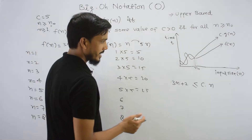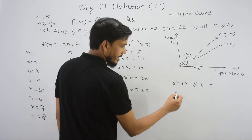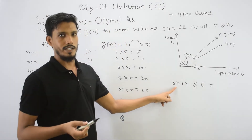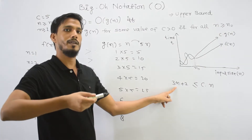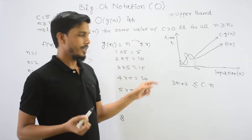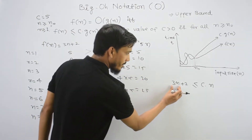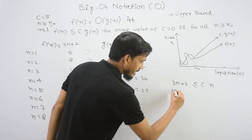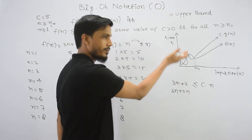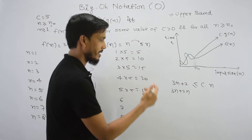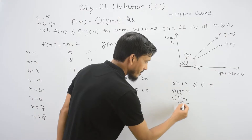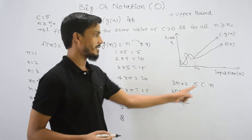How do we identify the value of c? Whatever function is given, we look at the dominating factor — the maximum power of n. Here it is 1, so 3n is the dominating factor. We write 3n as 3n and 2 as 2n (treating the constant as a coefficient of n), giving 3n + 2n = 5n. So 5n means c value is 5.